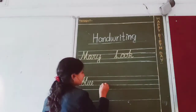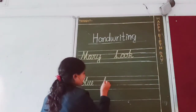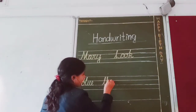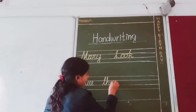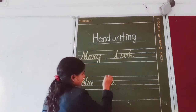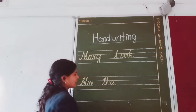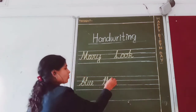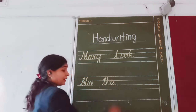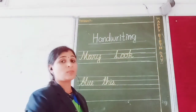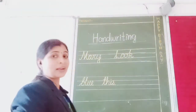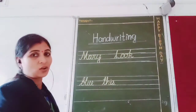Now we have to write the small cursive letters D-H-I-S — 'this.' Pause the video and write this with me. Write it in your fair copy.